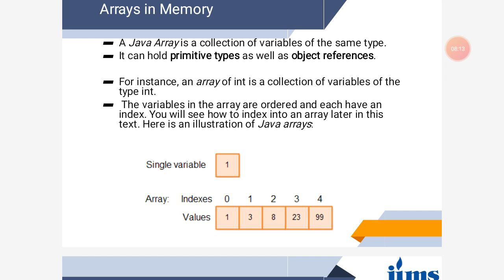How do we manage an array in memory? We mention only one name and it can store primitive types as well as different objects of similar type. If we mention a size of 5, there will be 5 locations with indices 0, 1, 2, 3, 4. Suppose the name of the array is A: A[0] will contain 1, A[1] contains 3, A[2] contains 8, A[3] contains 23, A[4] contains 99. This is the process to store values in memory.